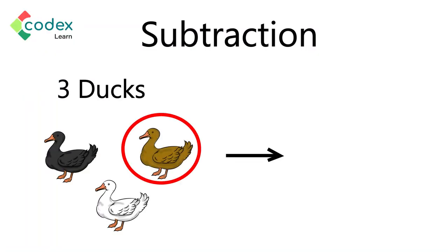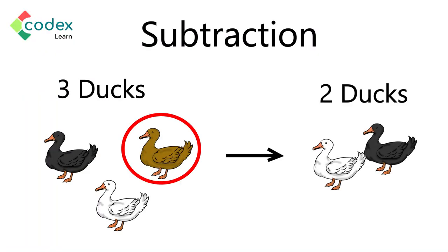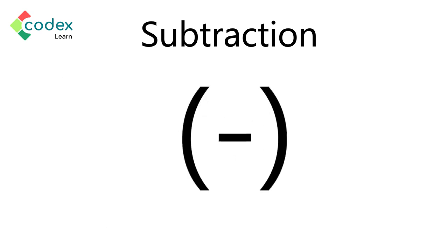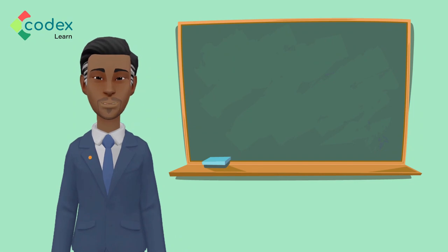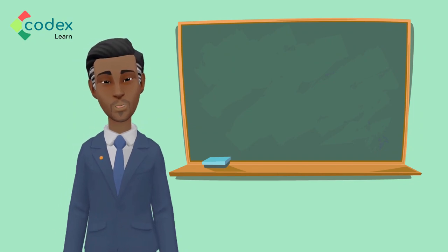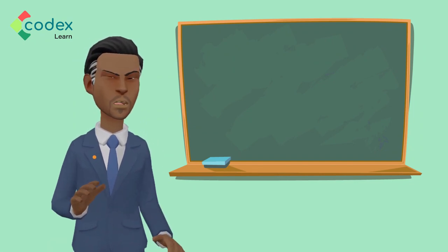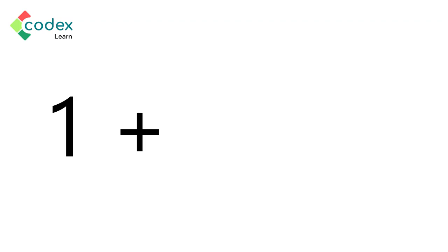So addition is simply adding or taking more, while subtraction is taking away from something or better still making less of something, and the symbol for subtraction is the minus sign. This gets interesting, stay with me kids.